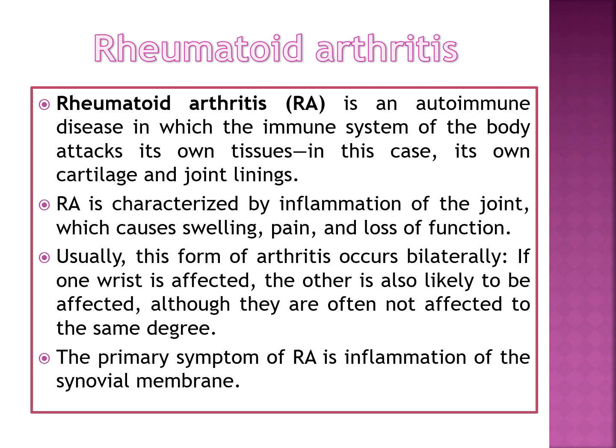Now let us discuss rheumatoid arthritis, or RA. Rheumatoid arthritis is an autoimmune disease in which the immune system of the body attacks its own tissues — in this case, its own cartilage and joint linings. RA is characterized by inflammation of the joint causing swelling, pain, and loss of function. Usually this form of arthritis occurs bilaterally: if one side is affected, the other is also likely to be affected, although not necessarily to the same degree.